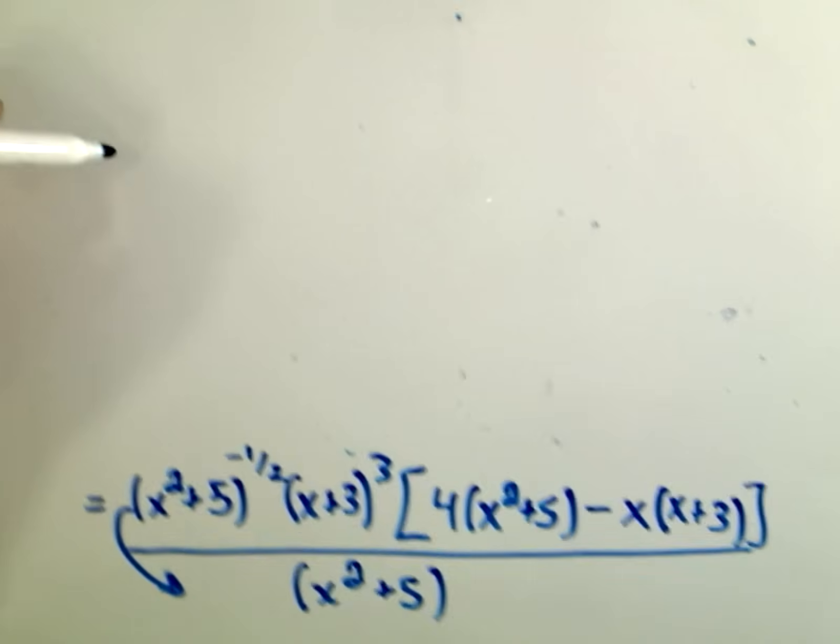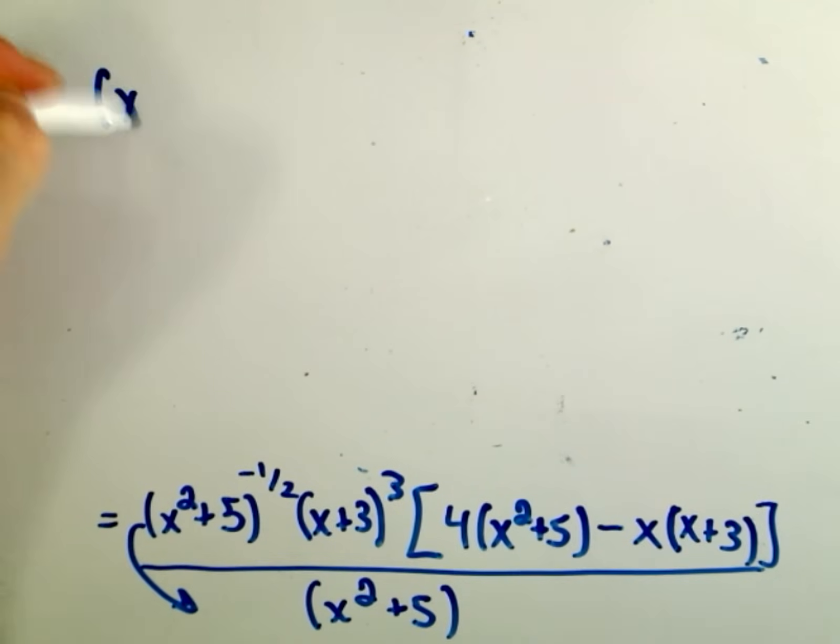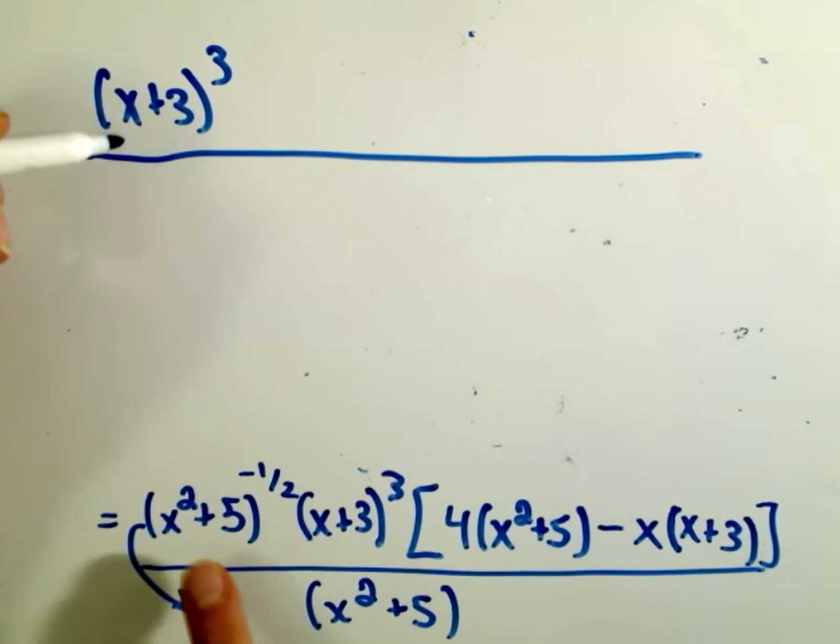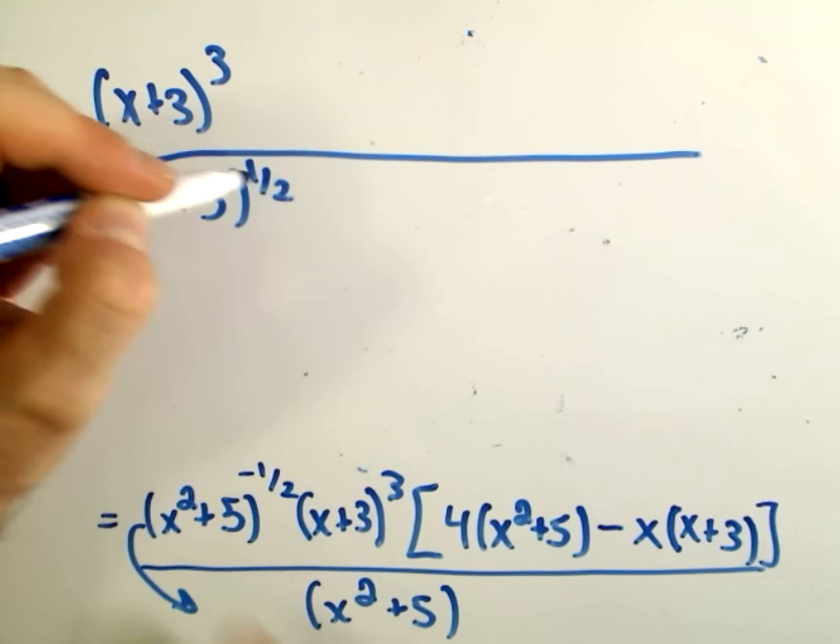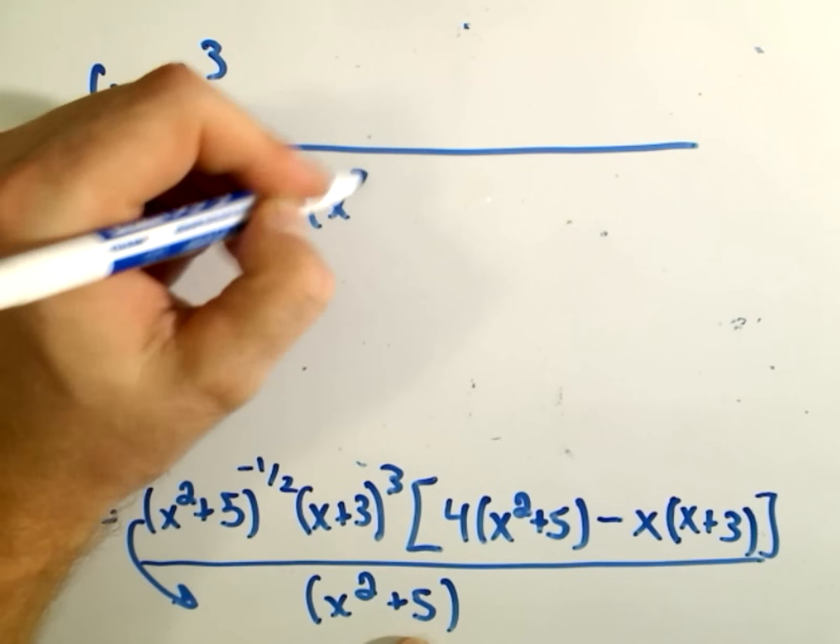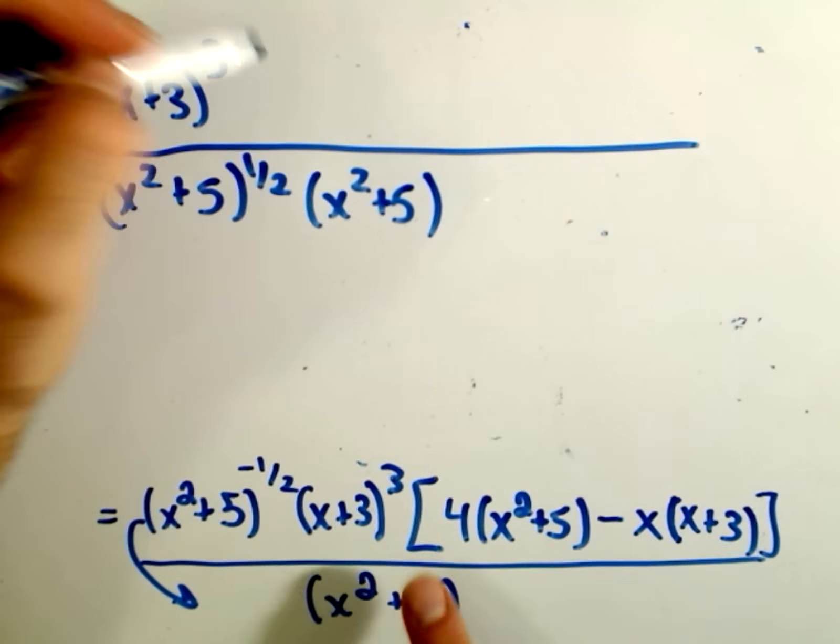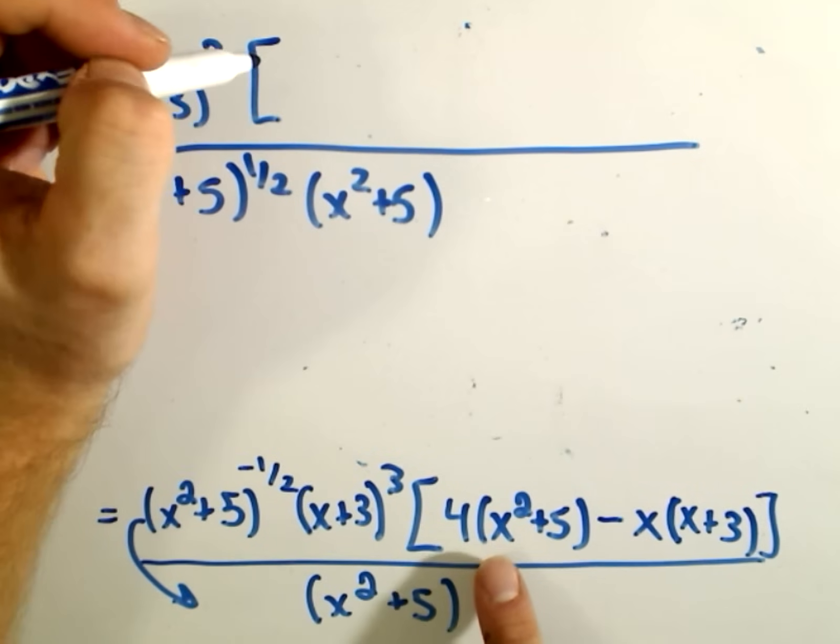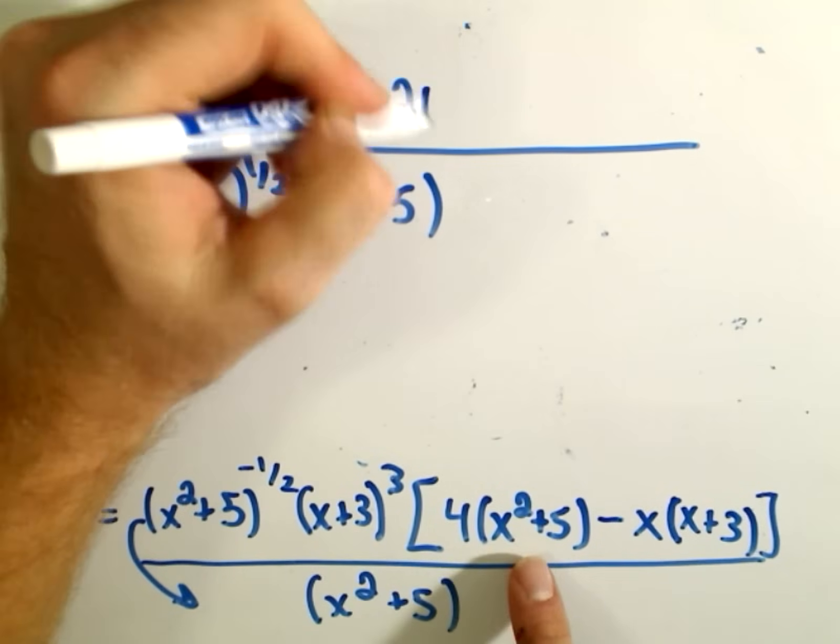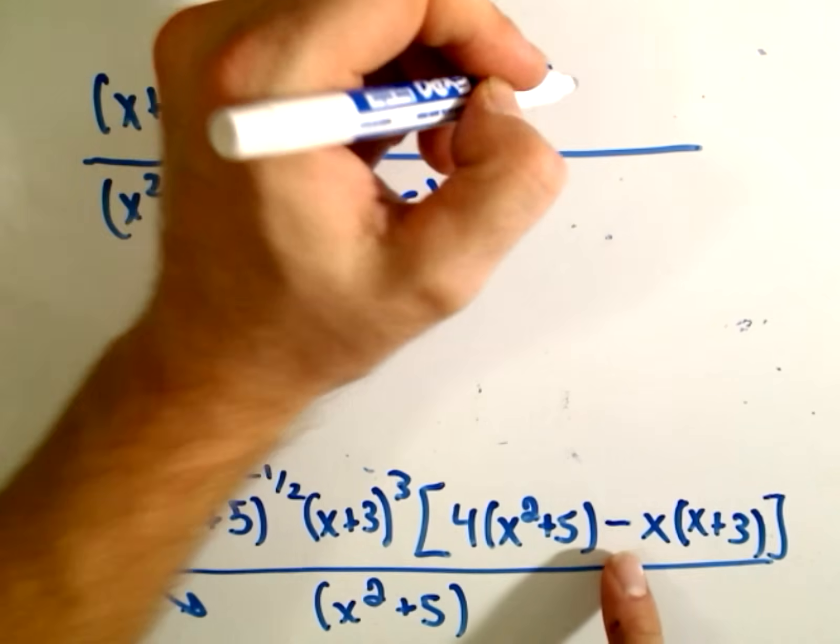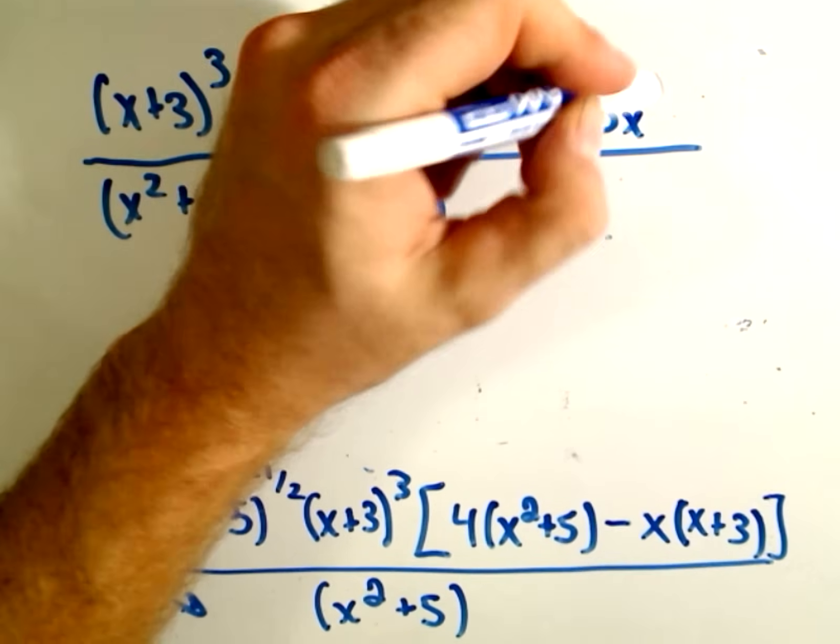Okay, so we've got basically the x plus 3. I'm going to leave him in the upstairs. This x squared plus 5, I'm going to move it to the bottom. Make its exponent to the positive 1 half. We've already got the x squared plus 5 down there. Inside the parentheses, I'm going to distribute. So I'll have 4x squared plus 20 minus x squared minus 3x.